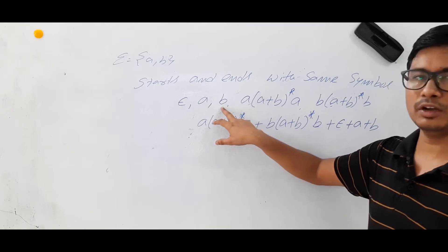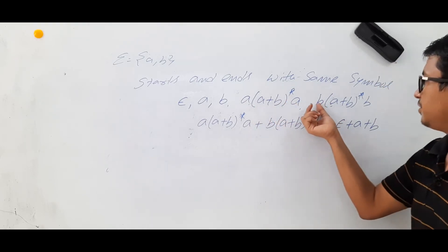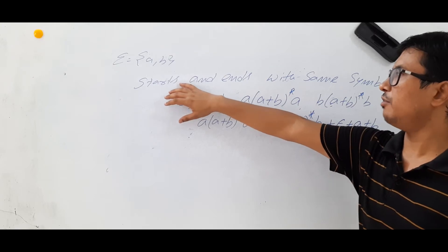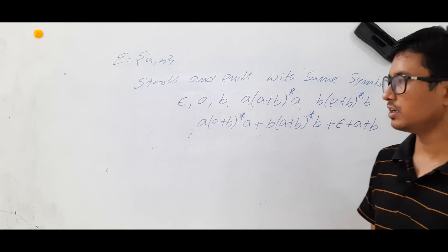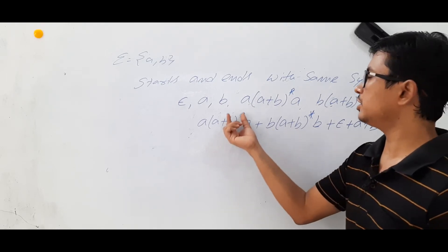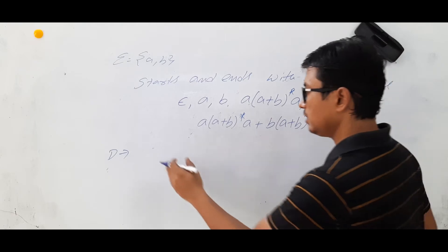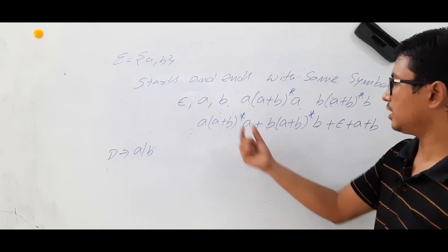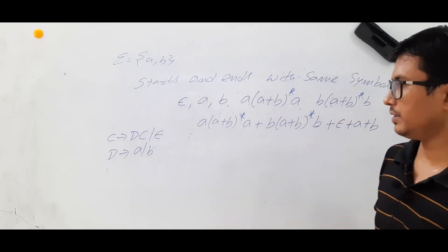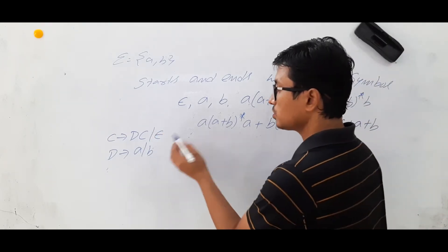Epsilon also starts and ends with the same symbol; 'a' starts and ends with 'a'; 'b' starts and ends with 'b'. If it starts with 'a', anything can be there in between and at the end it should be 'a'. If it starts with 'b', anything can be there and it should end with 'b'. Now to find the grammar: take the smallest pattern, which is (a ∪ b) Kleene closure. Let D → a | b, and then C → DC | ε, so C can generate epsilon or (a ∪ b) one or more times.